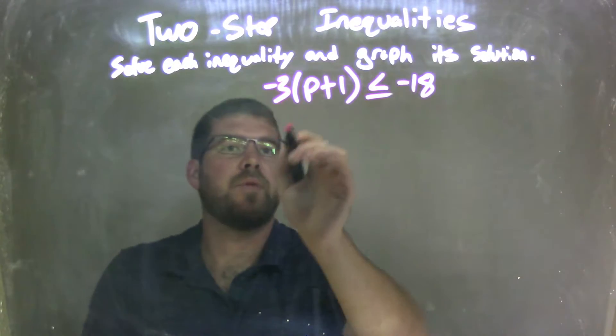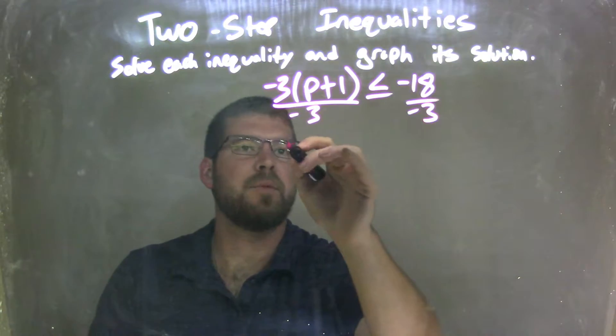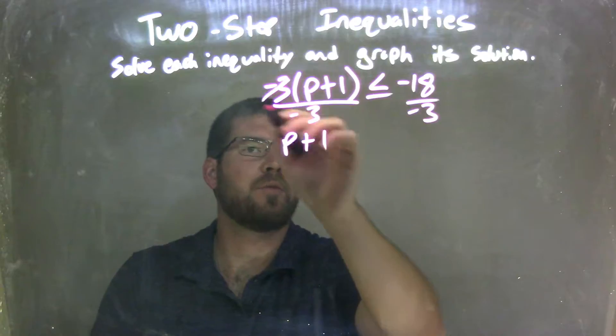Well, my first step is I have negative 3 there, so I need to divide by negative 3 to both sides. That leaves me with p plus 1 out on the left. The negative 3s will cancel.